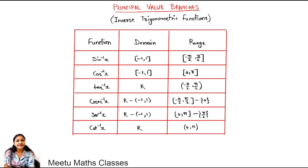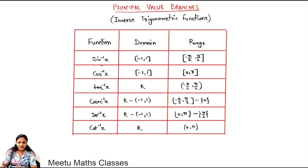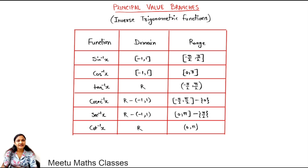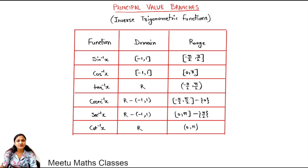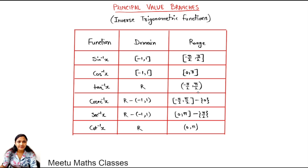Before starting the exercise, we are going to first discuss about the principal value branches of some inverse trigonometric functions. The first function is sin inverse x. The domain of sin inverse x is closed interval minus 1 to 1, and the range is closed interval minus pi by 2 to pi by 2. The domain of cos inverse x is also closed interval minus 1 to 1, and the range is closed interval 0 to pi. The domain of tan inverse x is the whole real line, but the range is open interval minus pi by 2 to pi by 2.